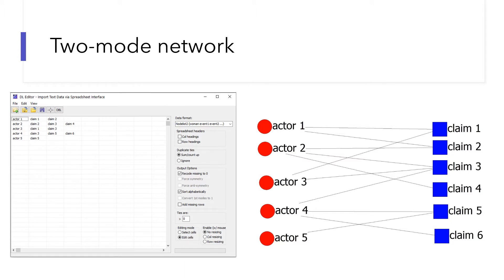To connect the policy actors and their claims, I put them in the same row. If you visualize the node list on the left, you get a network on the right. Actor 1 made claim 1 and 2, so I use a tie to connect actor 1 to claim 1 and 2 respectively. Actor 2 made claim 2, 3, and 4. Then I use a tie to connect actor 2 to claim 2, 3, and 4 respectively.